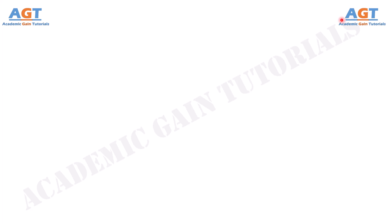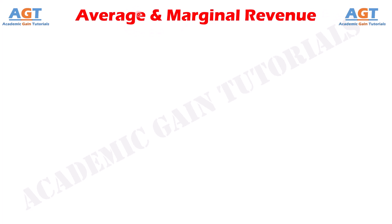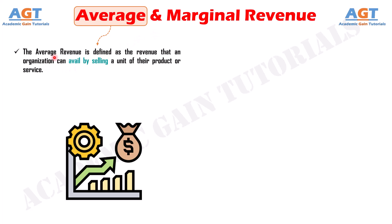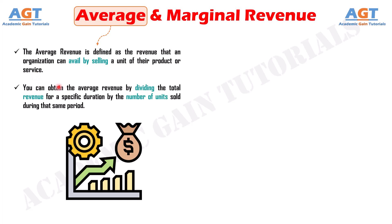Welcome to Academic Gain Tutorials. In this video, we will look into the differences between average revenue and marginal revenue. The average revenue is defined as the revenue that an organization can avail by selling a unit of their product or service. You can obtain the average revenue by dividing the total revenue for a specific duration by the number of units sold during that same period.